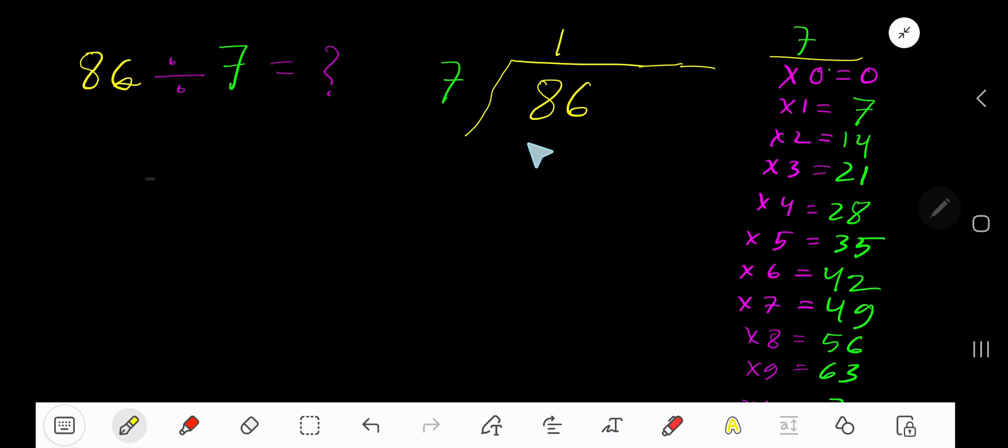1 times 7 is 7. Subtract. Bring down the next digit to get 16. 7 goes into 16 how many times? 3 times is 21, which is too large, so 2 times actually. 2 times 7 is 14. If you subtract, then you are getting 2.